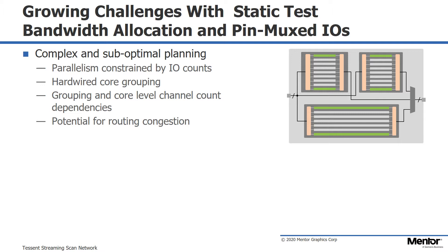The reason for that is the many constraints we have to deal with. For example, how many cores you can test concurrently is determined by how many IOs you have available for scan test. Also, which cores can be tested concurrently is a hardwired decision — something you have to decide during the design process. There are also dependencies related to the number of channels at core level, which again determines which cores you can test in parallel.